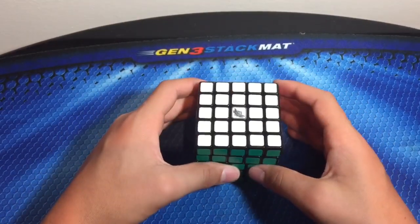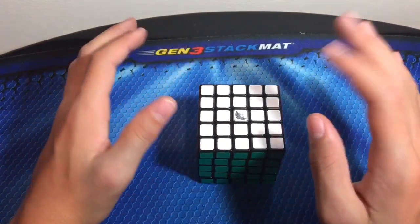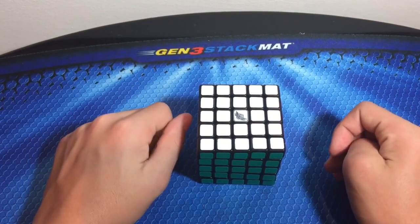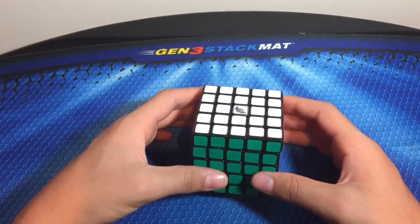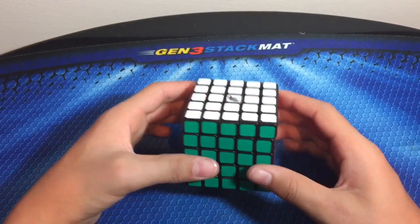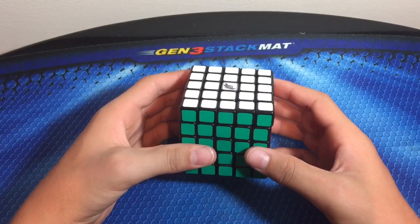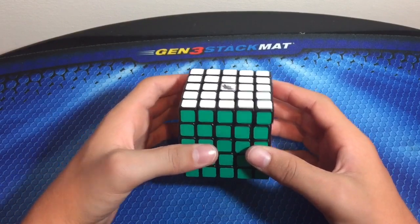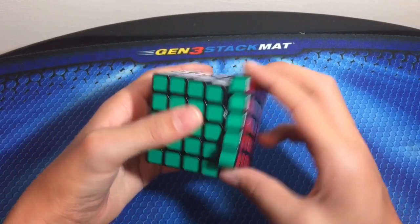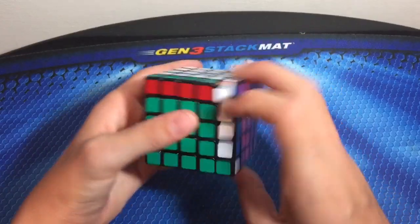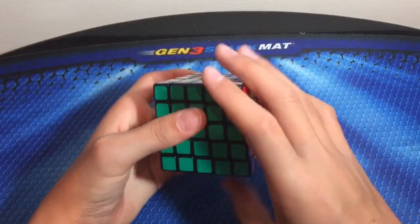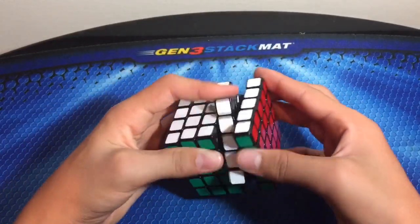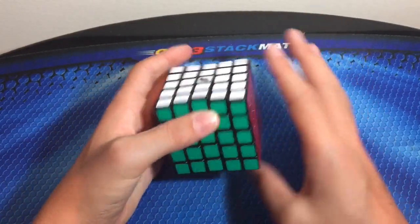This cube is $13. So let's get this through our heads. The MoYu HuaChuang and the MoYu AuChuang, the NewChuang and the OldChuang, they are over $30. That's over two times as much as this $13 Cyclone Boys 5x5. That is absolutely crazy. I would recommend this off the bat.